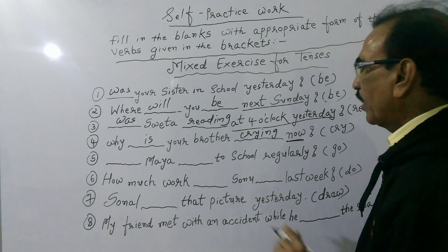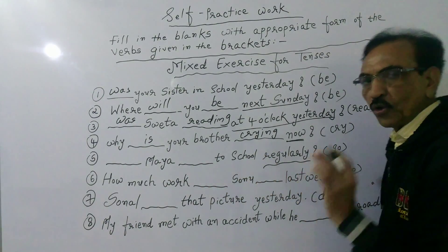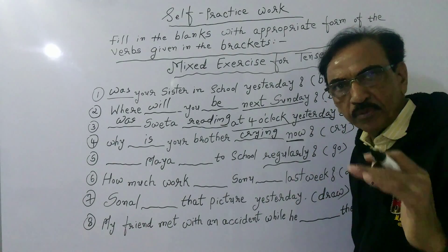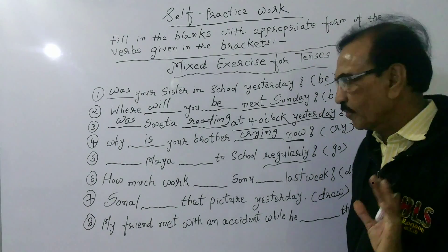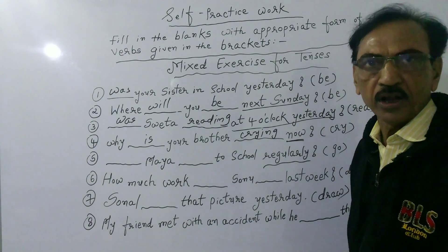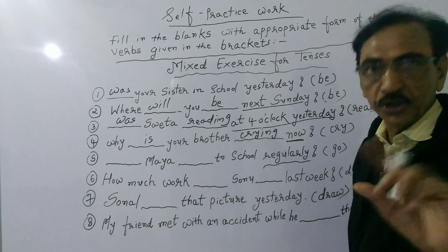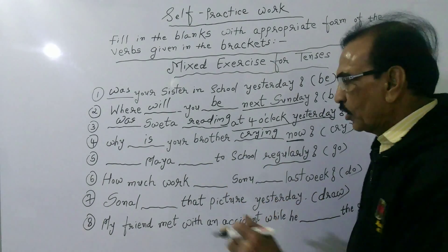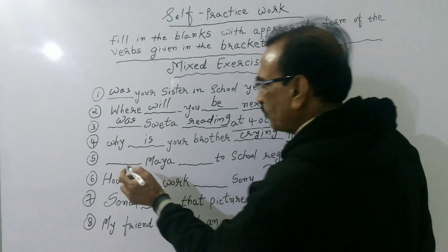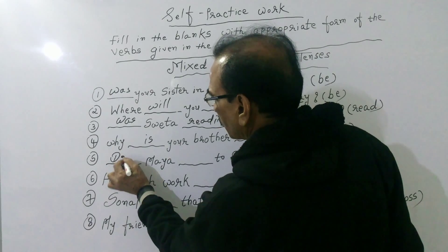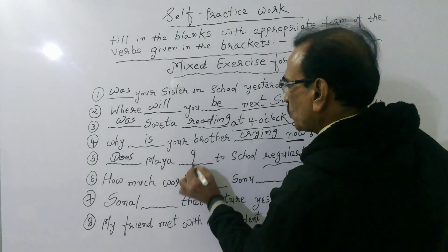Next sentence: Dash Maya dash to school regularly. 'Daily', 'everyday', 'regularly', 'sometimes', 'generally' — these are keywords for simple present tense. For third person singular (he/she/it), we use a separate formula. Maya is third person singular, so the answer is: Does Maya go to school regularly?